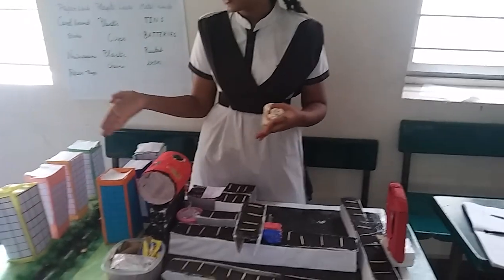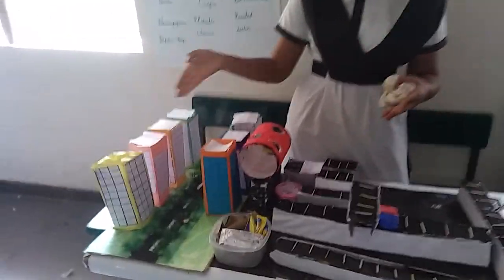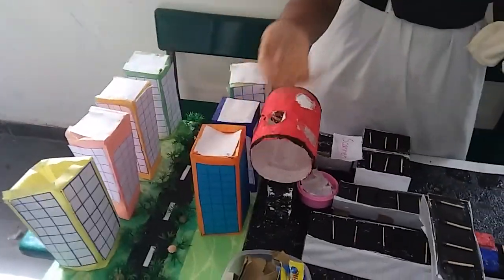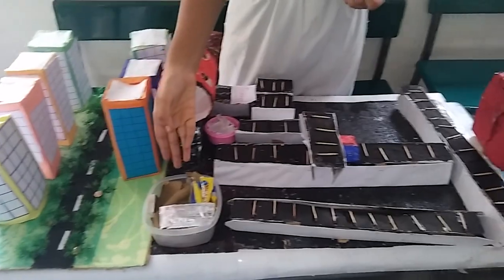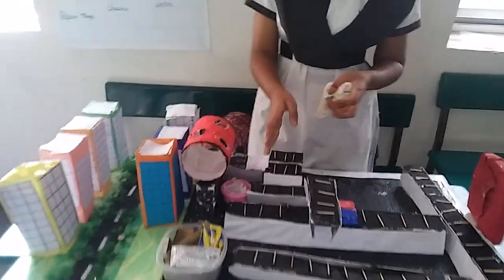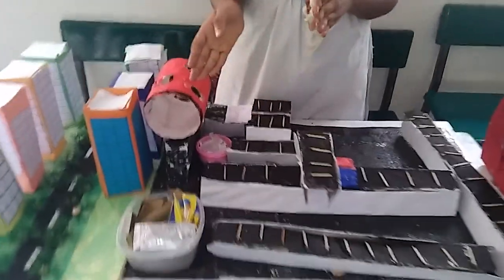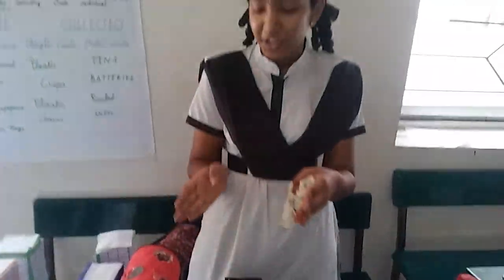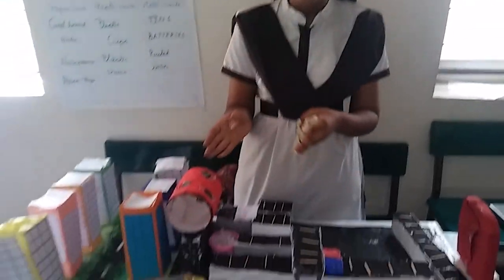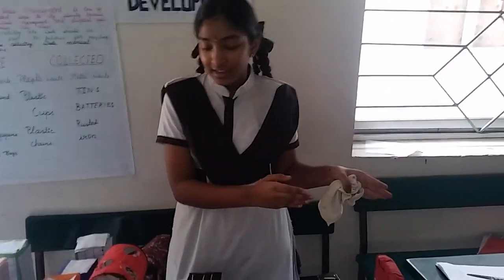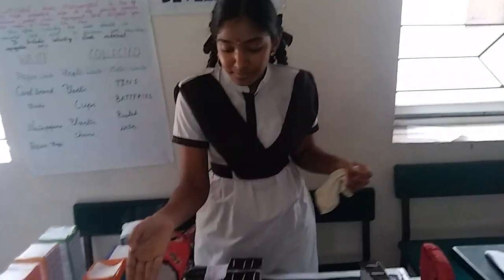The process starts with the collection of garbage from houses, buildings, or villages. This waste is then brought to facilities where people manually separate all the waste that can be separated, and send it to the recycling process.